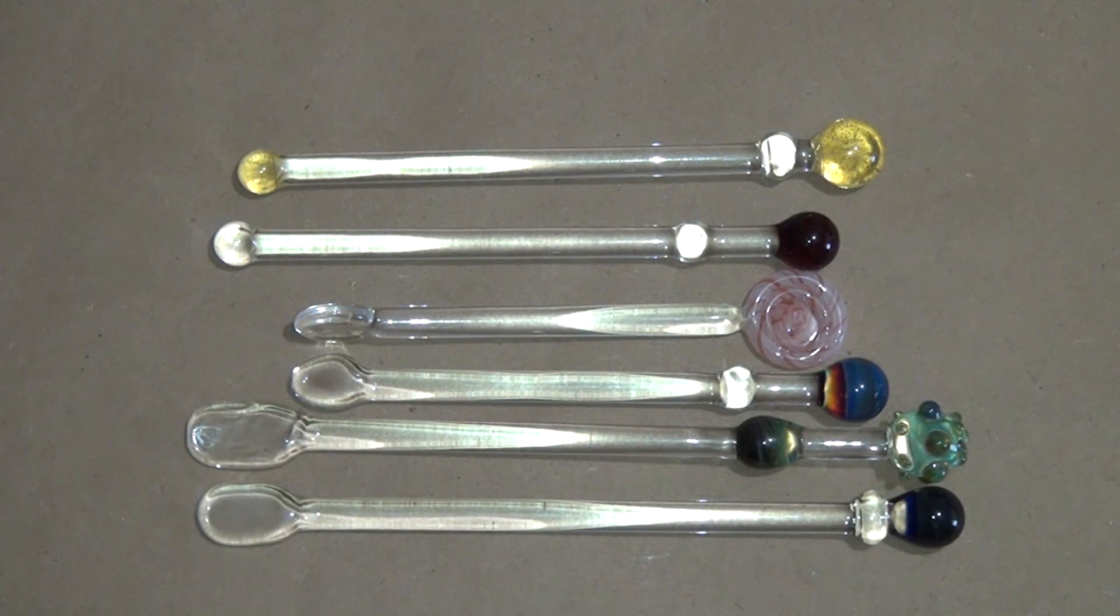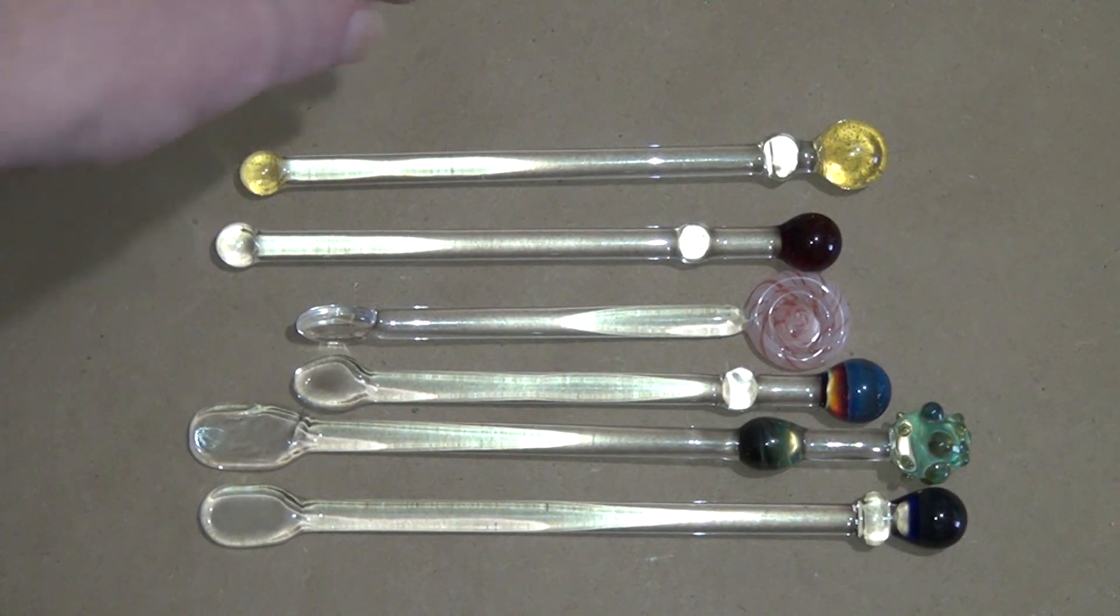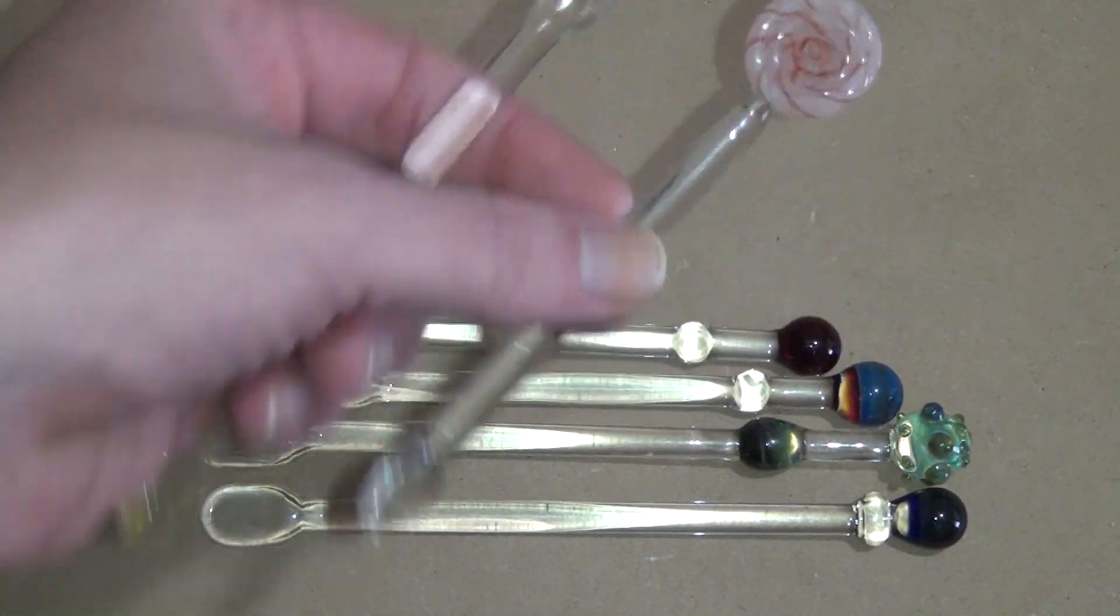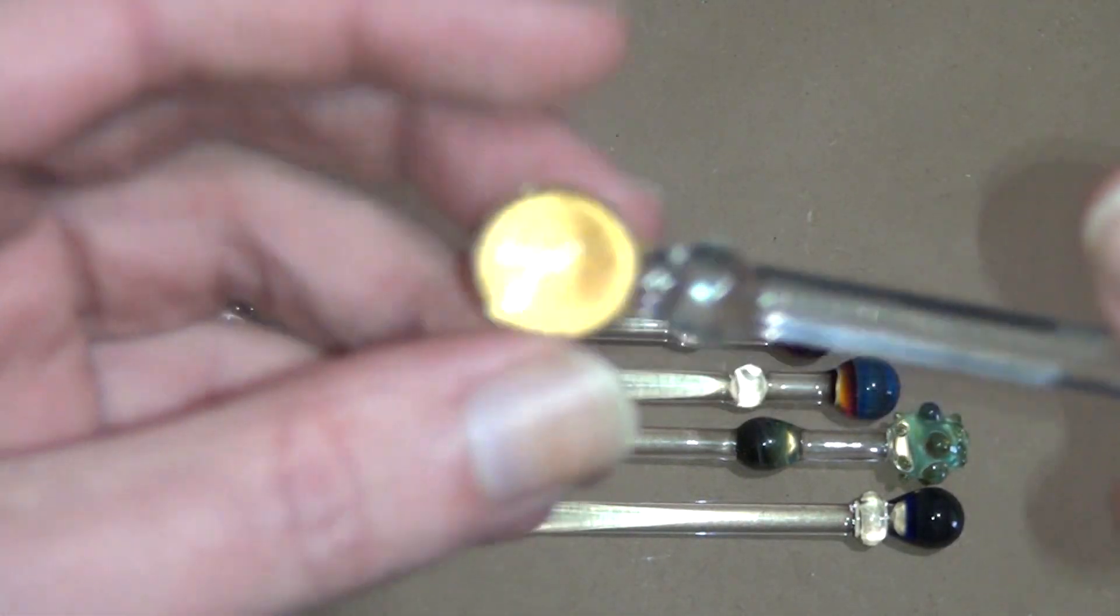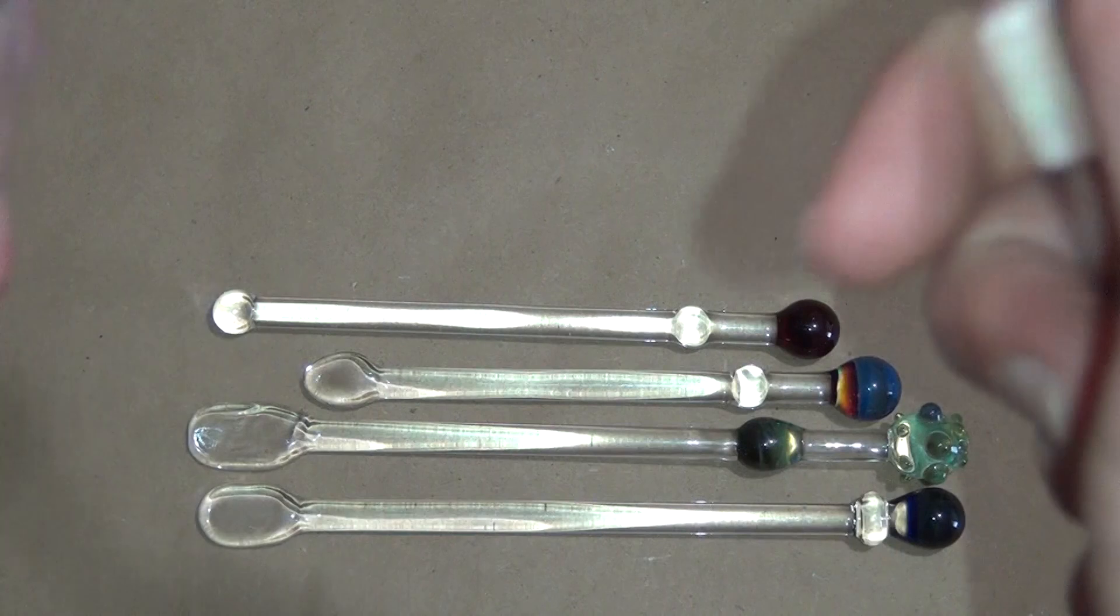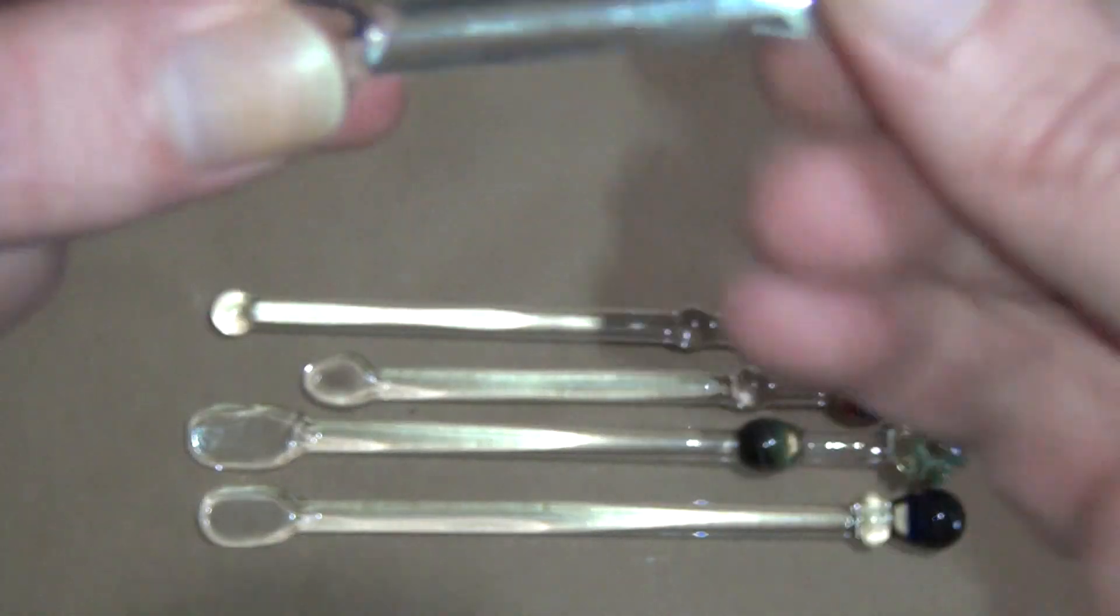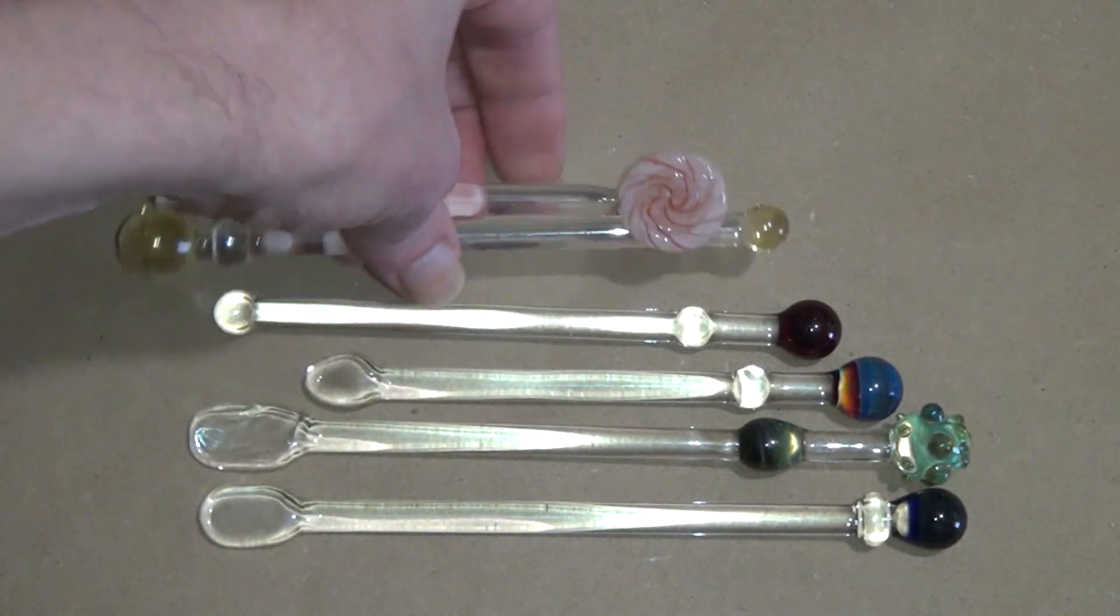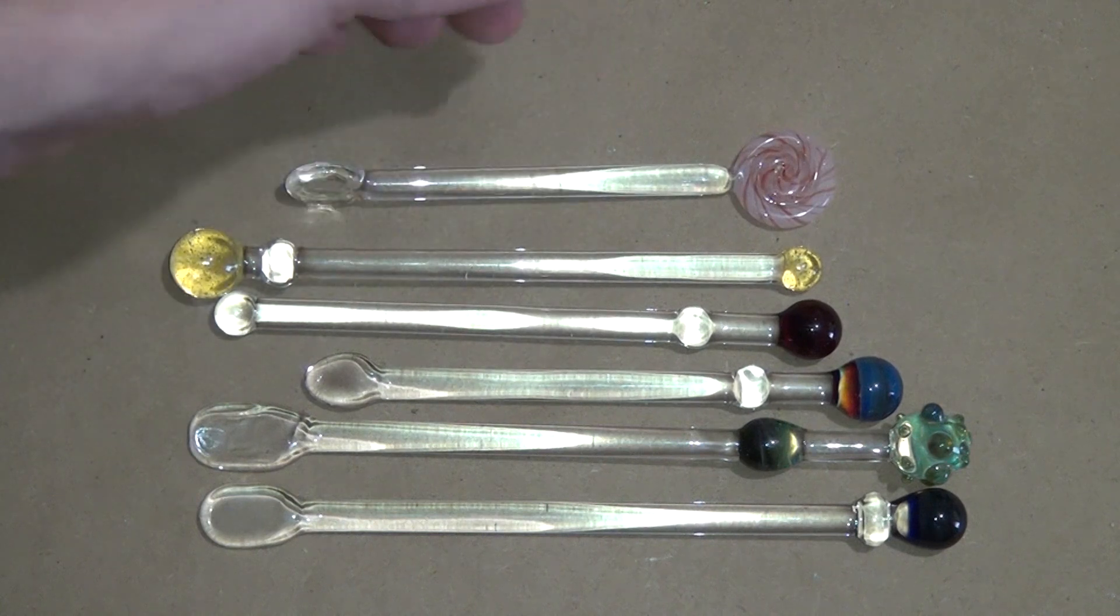I think these stir sticks are a really good beginner project because you can practice all kinds of fundamentals. You can practice all the basics of shaping the rod, making spheres, making marios, avolios, different shapes, paddle shapes, you can work with canes. So all the basics of working with solid forms you can practice by making stir sticks.